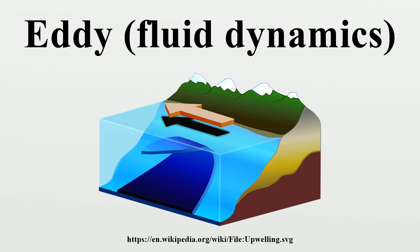Eddies are common in the ocean, and range in diameter from centimeters to hundreds of kilometers. The smallest scale eddies may last for a matter of seconds, while the larger features may persist for months to years. Eddies which are between about 10 and 500 kilometers in diameter, and persist for periods of days to months, are known in oceanography as mesoscale eddies.